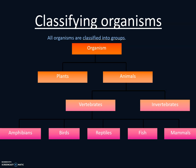Each of these categories has specific characteristics, which is why we put them into these groups. For example, birds have wings to fly, and fish have gills to breathe underwater. That's a quick snapshot of what classification is and how we classify plants and animals into different groups.